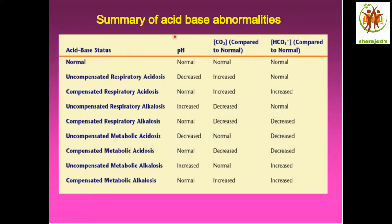This is a summary of acid-base abnormalities. Looking at acid-base status: pH, CO2, and bicarbonate compared to normal. If all are normal — pH normal, CO2 normal, bicarbonate normal — it is a normal ABG.